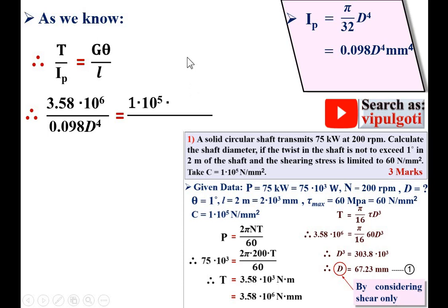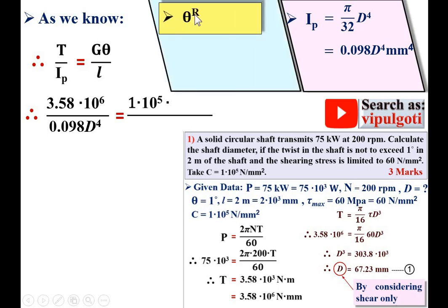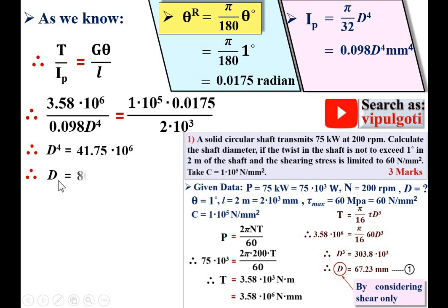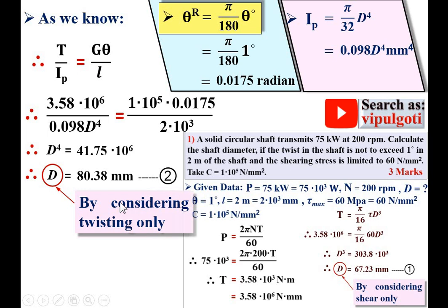Convert θ to radians: θ_rad = (π/180) × θ_deg = (π/180) × 1 = 0.0175 rad. Substituting T = 3.58 × 10⁶, G = 1 × 10⁵, θ = 0.0175 rad, and L = 2 × 10³ mm into the equation, simplify to find D⁴ and then D = 80.38 mm. This is the diameter considering twisting only — call this Equation 2.